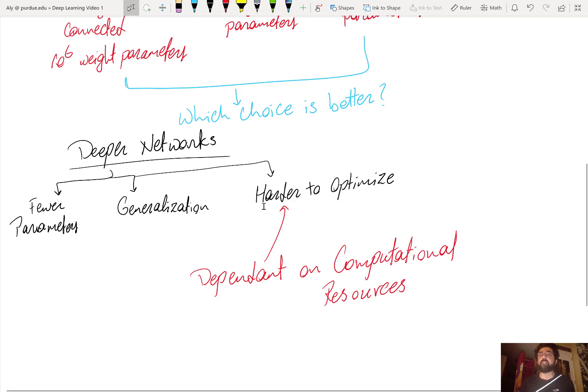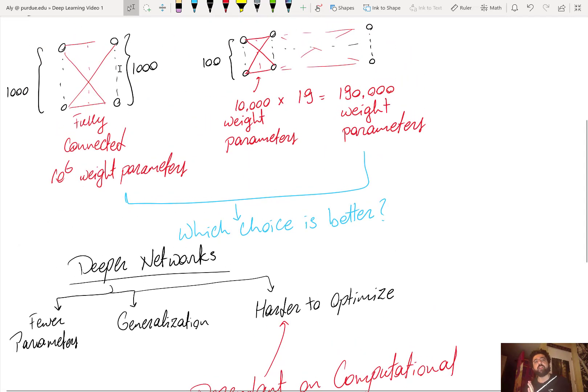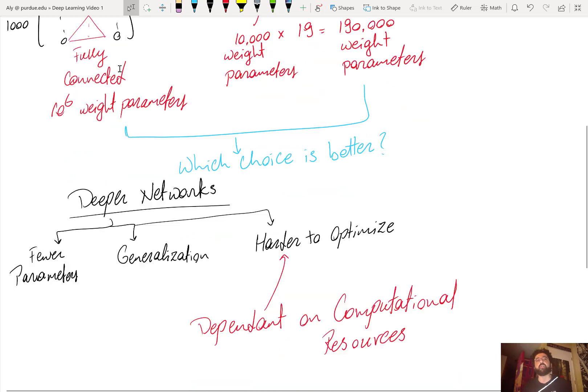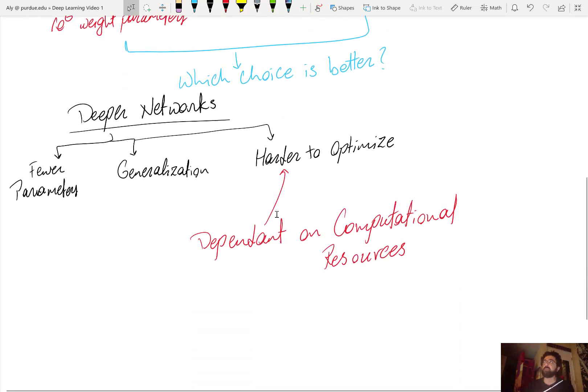But I deprive the network from the luxury of exploring more options which the shallower network with more parameters would do. So the question here becomes a question of available computational resources. Because if computational resources are abundant, then maybe depth would introduce complexity in the optimization that I don't need.